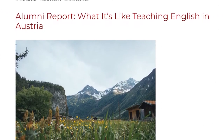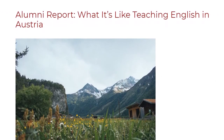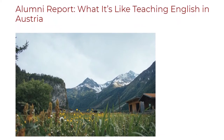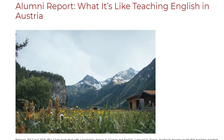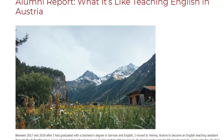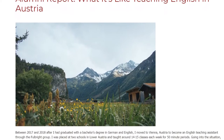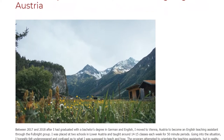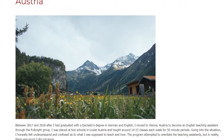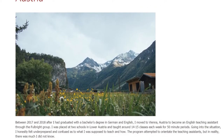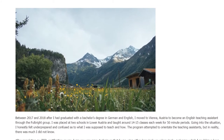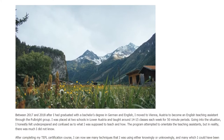What it's like teaching English in Austria. Between 2017 and 2018, after I had graduated with a bachelor's degree in German and English, I moved to Vienna, Austria to become an English teaching assistant through the Fulbright program. I was placed at two schools in Lower Austria and taught around 14-15 classes each week for 50-minute periods.